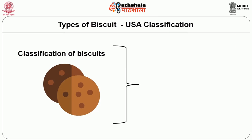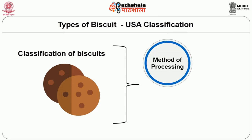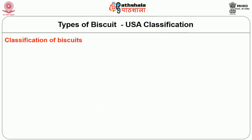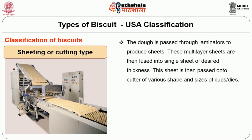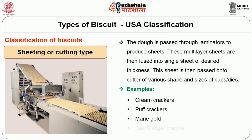The USA classification of biscuits is based on the method of processing, particularly on the way biscuits are shaped. The first type is the sheeting or cutting type. The dough is passed through laminators to produce sheets which are fused into a single sheet of desired thickness. This sheet is then passed on to cutters of various shapes and sizes. Examples include cream crackers, puff crackers, marigold, salt and sugar crackers, and 50-50.